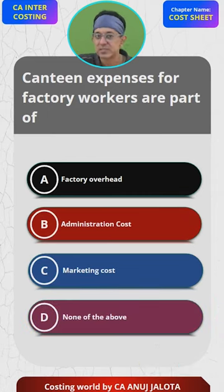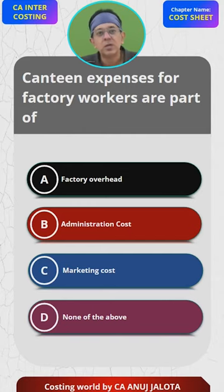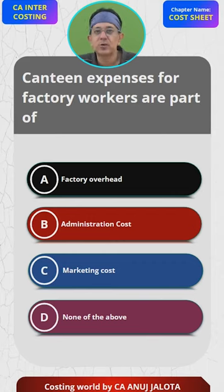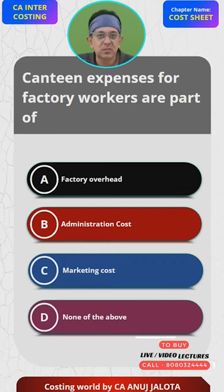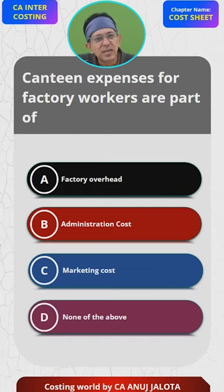C cannot be the answer — these are factory workers, so this is not part of selling and distribution. Administration costs are basically office expenses, so that cannot be the answer either.